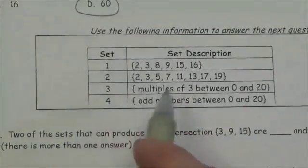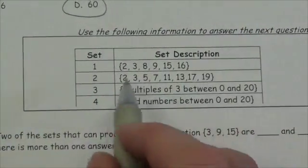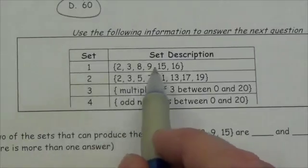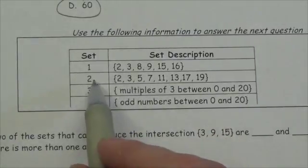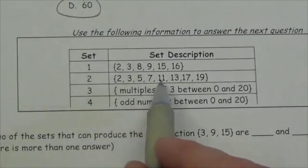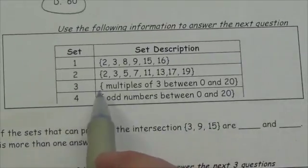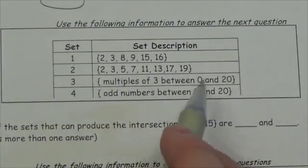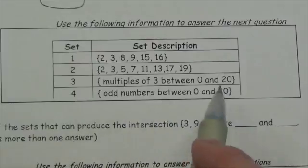Okay, so this question says we've got these sets right here. The first set is {2, 3, 8, 9, 15, 16}. The second one is {2, 3, 5, 7, 11, 13, 17, 19}. This next one is multiples of 3 between 0 and 20, and the next one is odd numbers between 0 and 20.